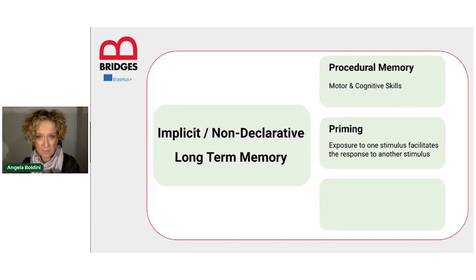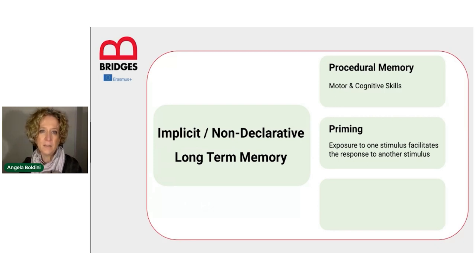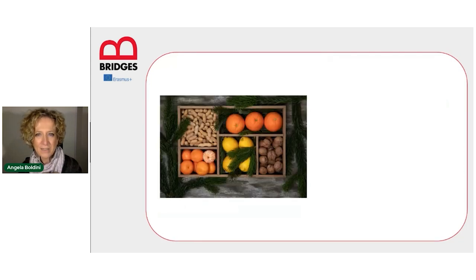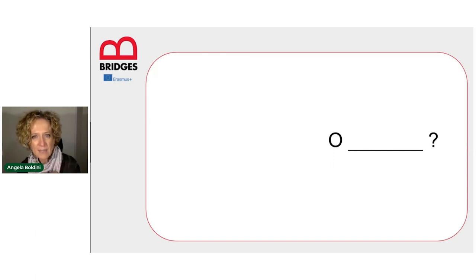Another example of implicit memory is the so-called priming effect. We have a priming effect when we have a facilitated access to certain information due to previous encounter — conscious or not — of that very same information or a related concept. For example, if I absent-mindedly see some oranges passing in front of a fruit and vegetable shop, and five minutes later a person asks me 'tell me the first word beginning with O that you can think of,' I might well say 'orange' — because that concept is active in my mind, even if I'm not aware of the fact that I just saw some oranges while passing by the shop.